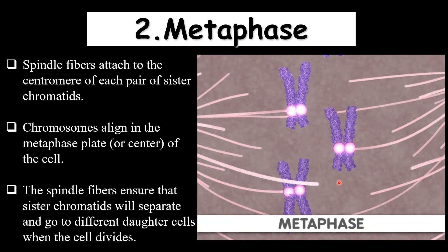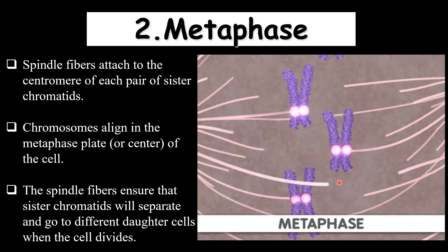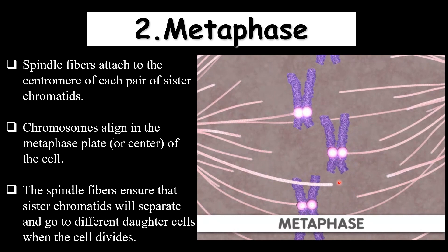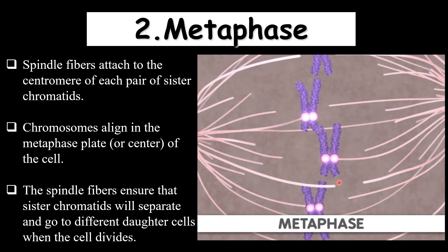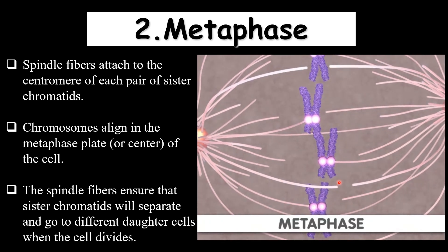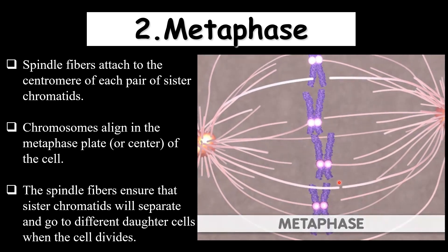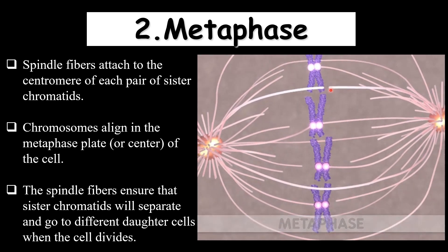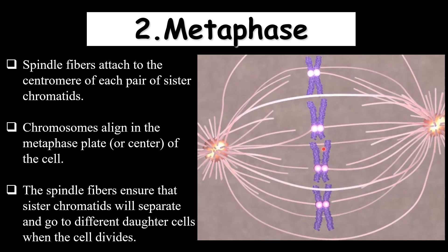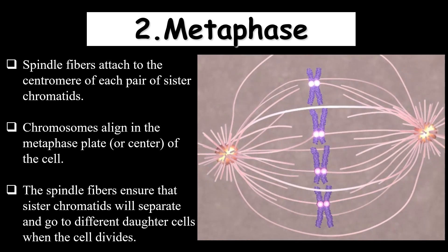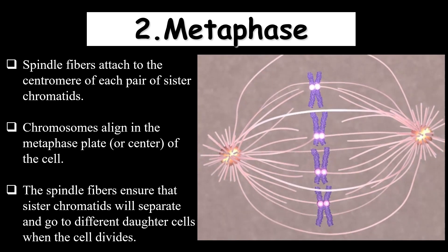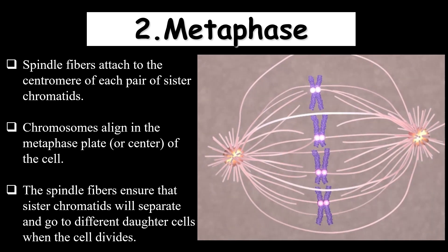The metaphase stage, where chromosomes are aligned at the metaphase plate, is the best phase for genetic studies, also known as karyotyping — in which a picture of the chromosomes is taken at this phase and later analyzed and visualized for genetic studies.